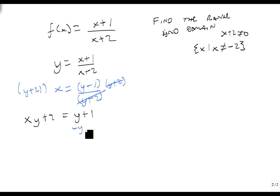Subtract a y from both sides. There's an x and a 2x, so we get xy minus y equals 1 minus 2x. Factor a y out. That's x minus 1 equals 1 minus 2x. And y equals 1 minus 2x over x minus 1. So my domain here